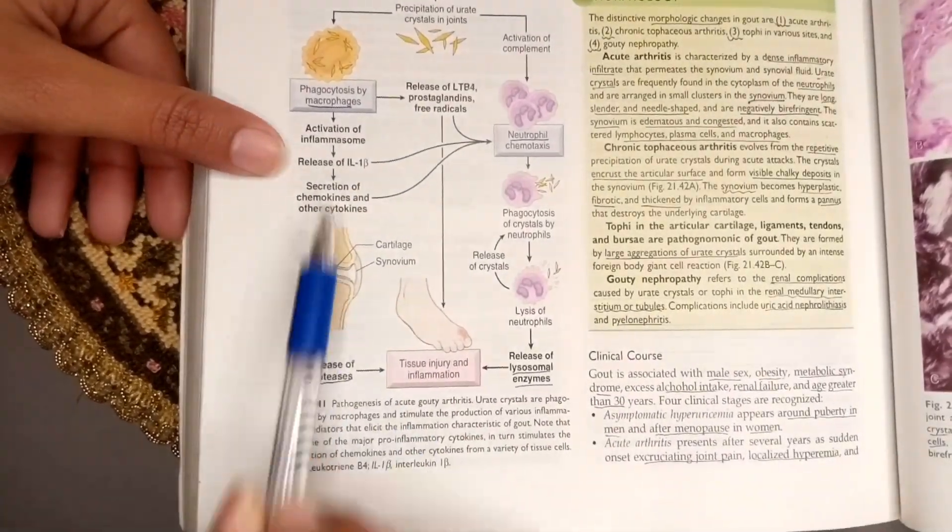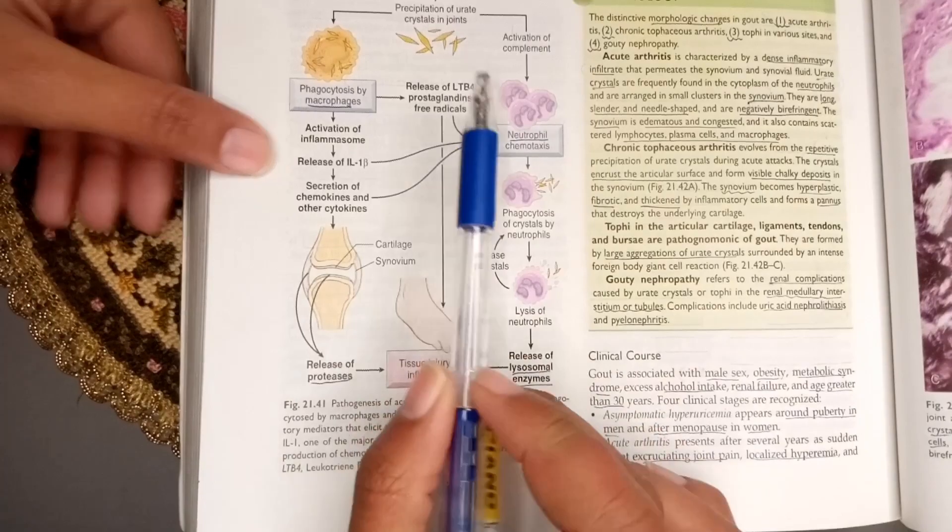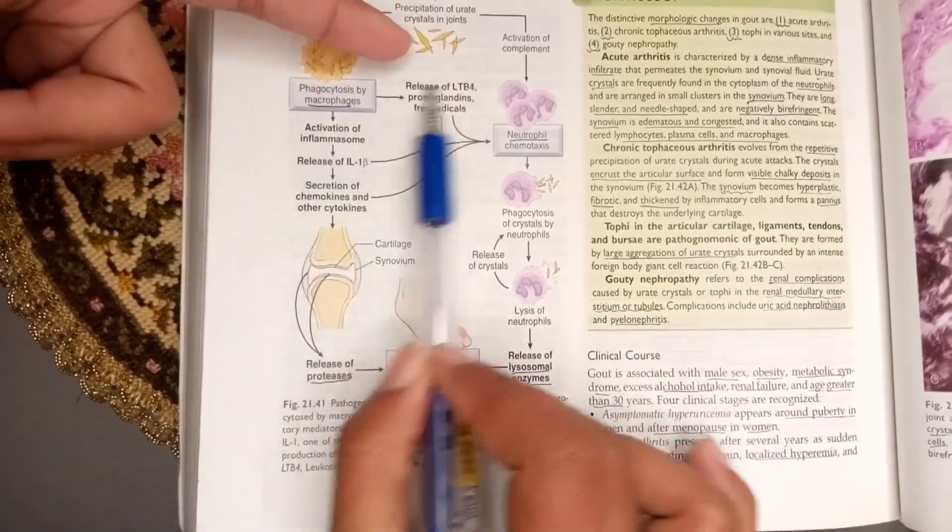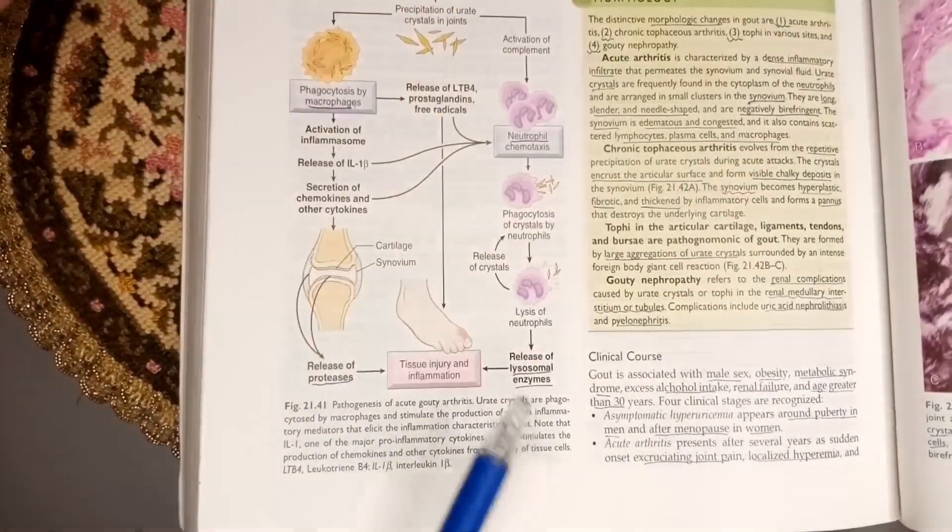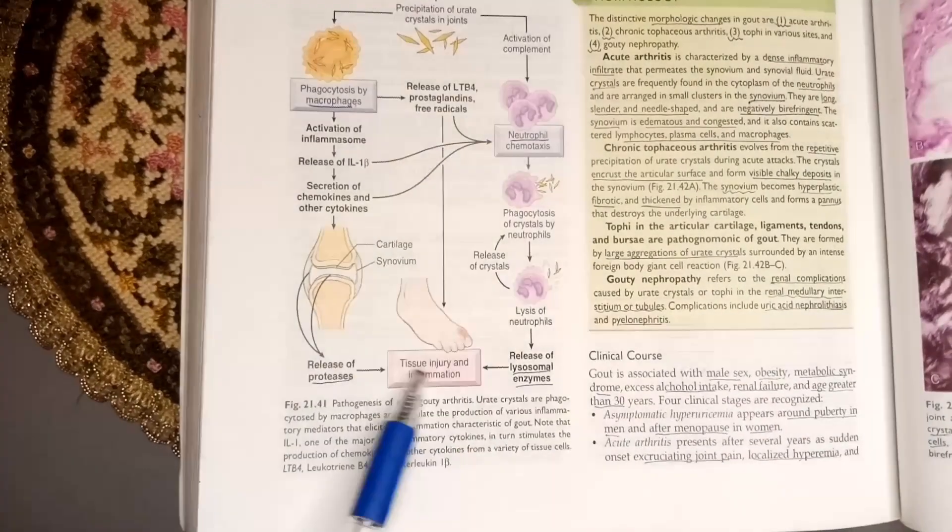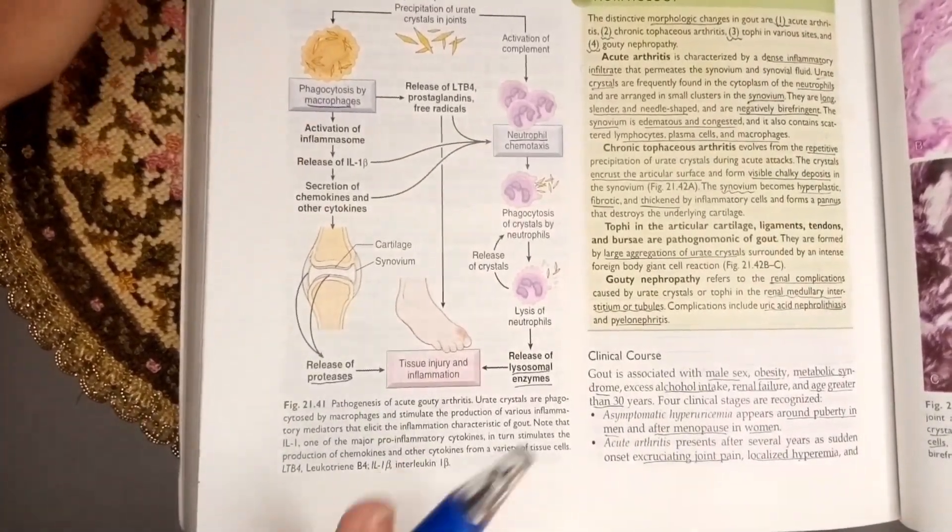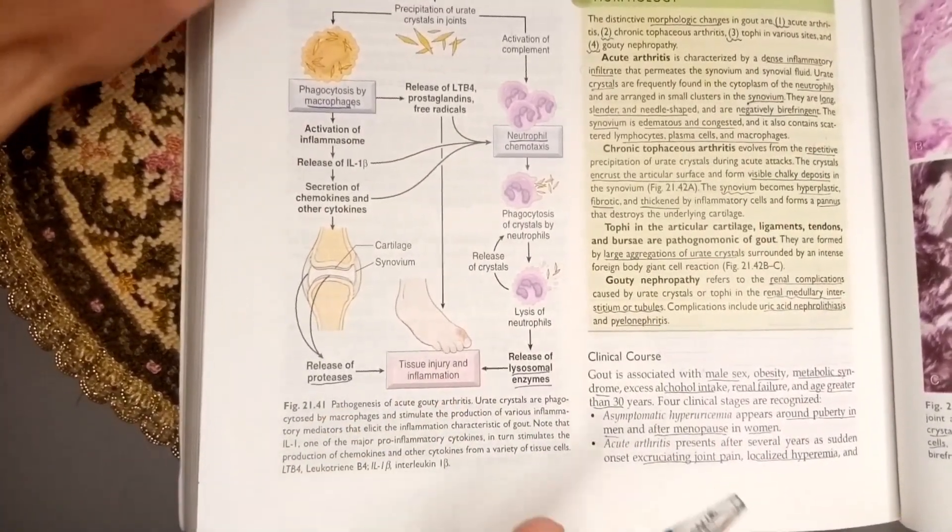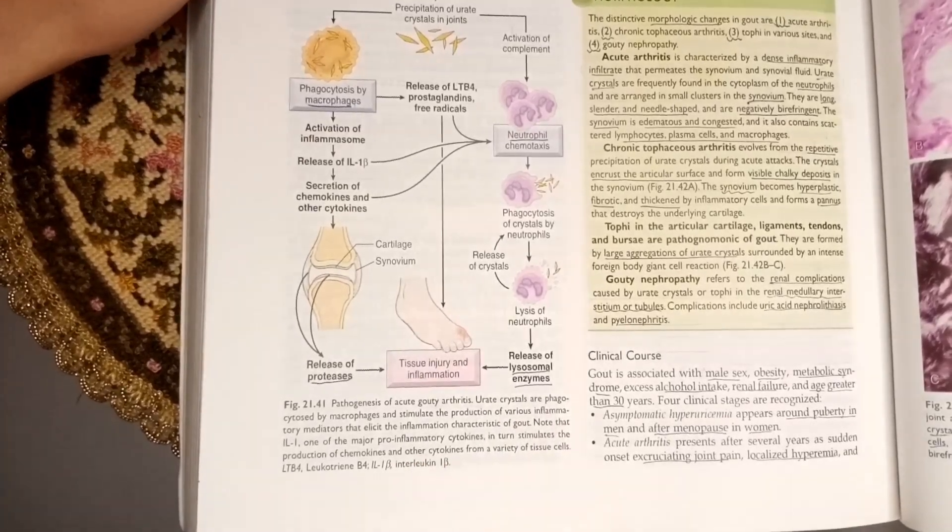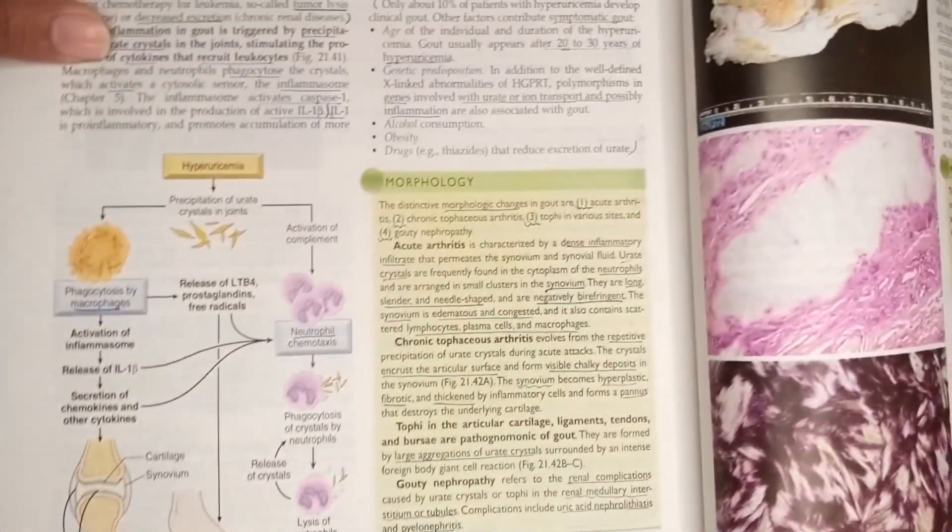The macrophages also release leukotrienes which directly cause tissue injury and inflammation. The prostaglandins and free radicals also cause injury directly, leading to gouty arthritis. I hope this is clear to you and I hope you enjoyed the video. Thanks for watching.